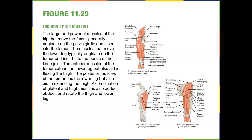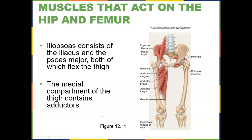A combination of glute and thigh muscles also adduct, abduct, and rotate the thigh and lower leg. The iliopsoas is a combination of the iliacus and the psoas major. A lot of people think they can massage deep in there, but it's very uncomfortable.